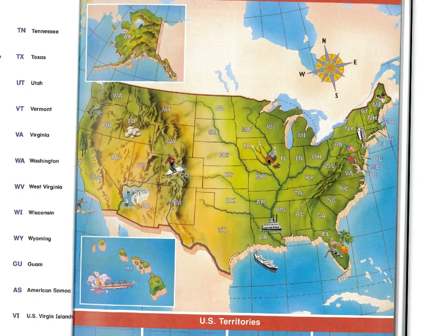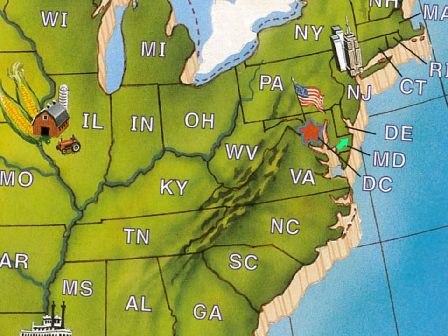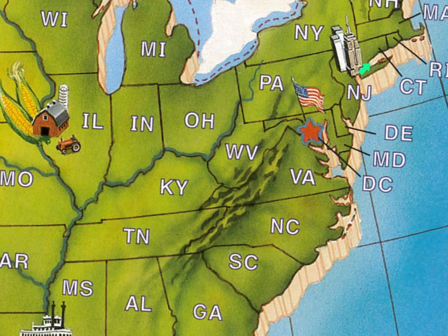And then we have these little bitty states that were some of the original 13 colonies. Our capital is not a state — it's the separate District of Columbia, Washington DC. We have Maryland, Delaware, New Jersey, and this is New York, but over here is the island of Manhattan where we have New York City. Connecticut, Rhode Island — this little bitty state.